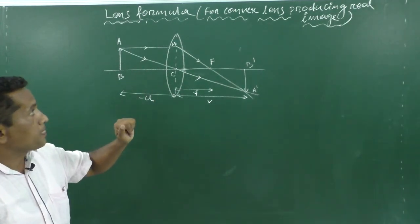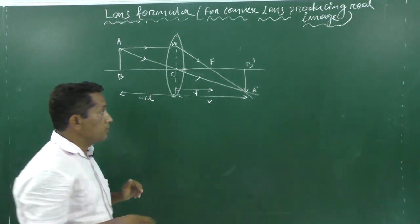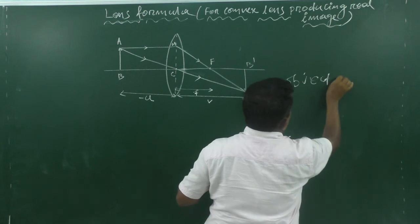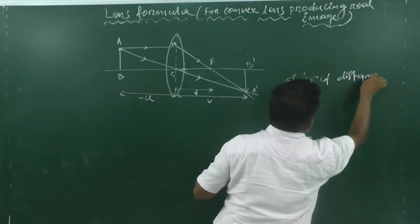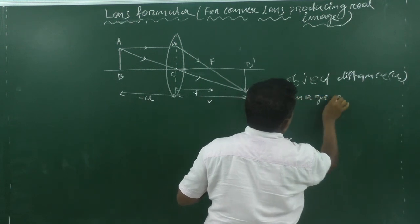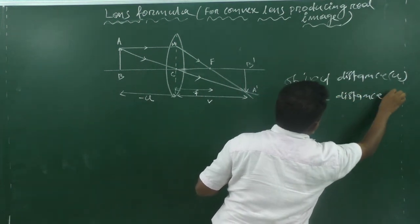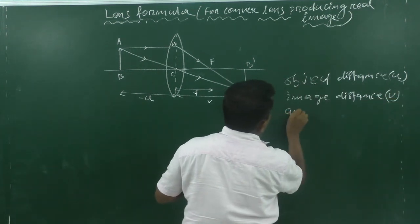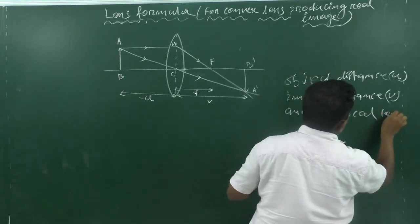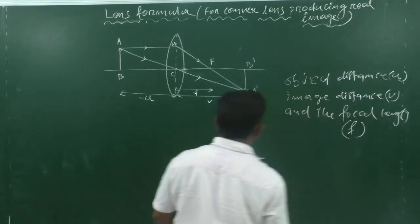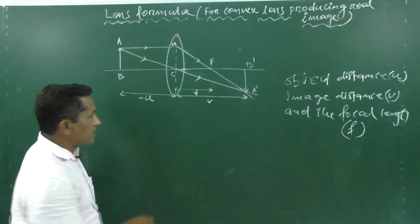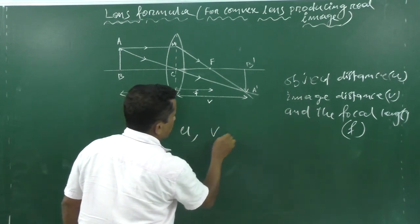The lens formula basically involves a relation between object distance u, image distance v, and the focal length f. The lens formula is a relation which connects u, v, and f.